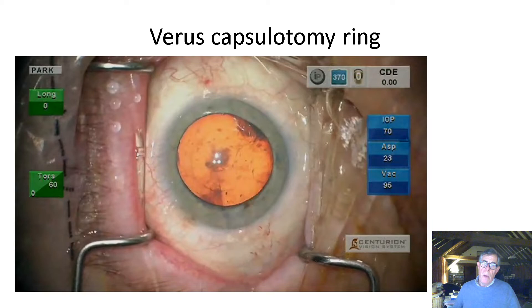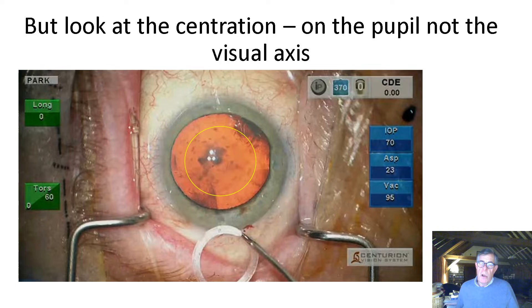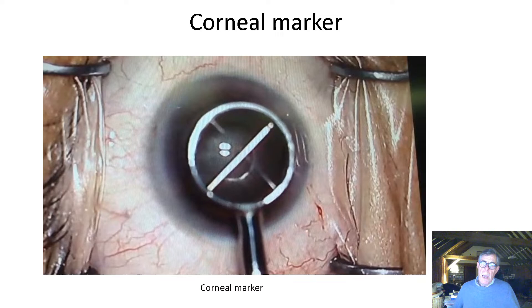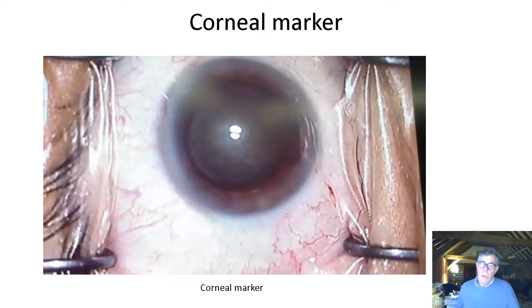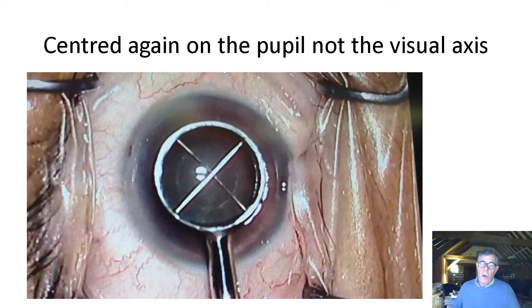Once the ring is removed from the eye, we can see where the capsulotomy is, and it doesn't bear too much relation to the visual axis. There is the first Purkinje image. A corneal marker is also being used and centered on the pupil rather than the first Purkinje image, and you can see there that the Purkinje image is not centered where you would want it to be.